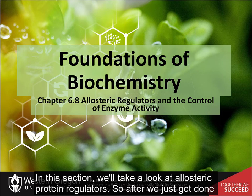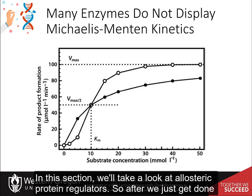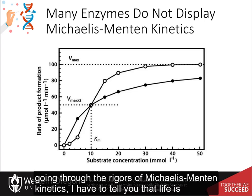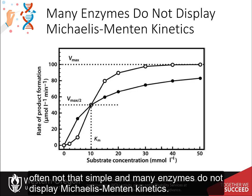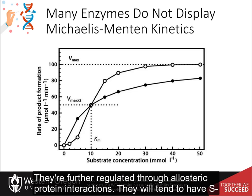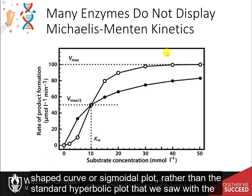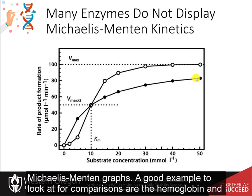In this section, we'll take a look at allosteric protein regulators. After going through the rigors of Michaelis-Menten kinetics, many enzymes do not display Michaelis-Menten kinetics. They are further regulated through allosteric protein interactions. They will tend to have S-shaped curves, or sigmoidal plots, rather than the standard hyperbolic plot that we saw with the Michaelis-Menten graphs.